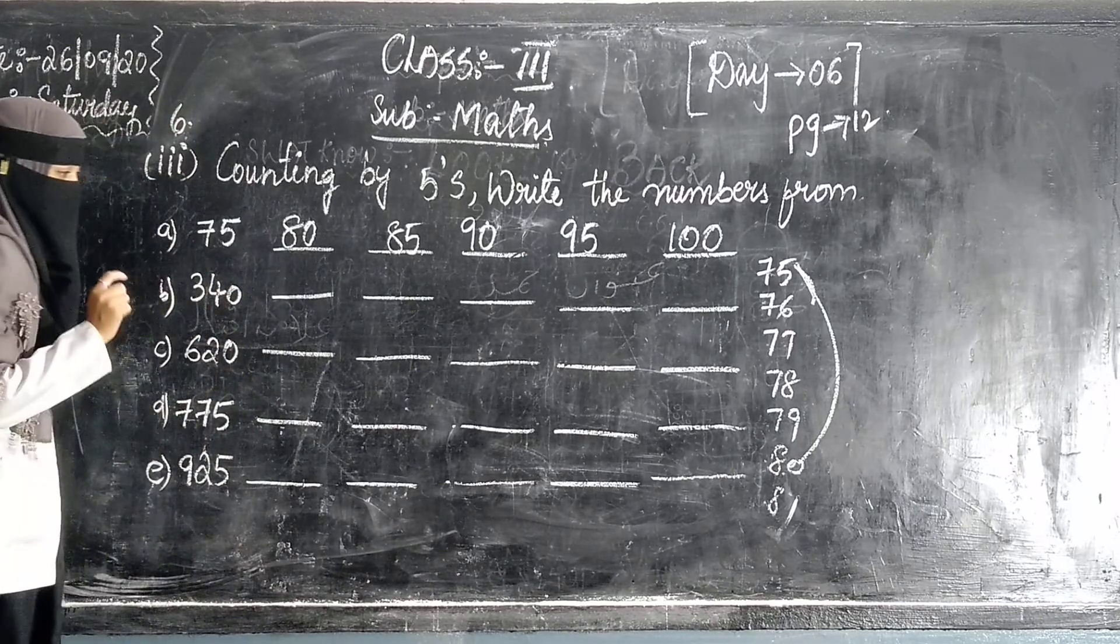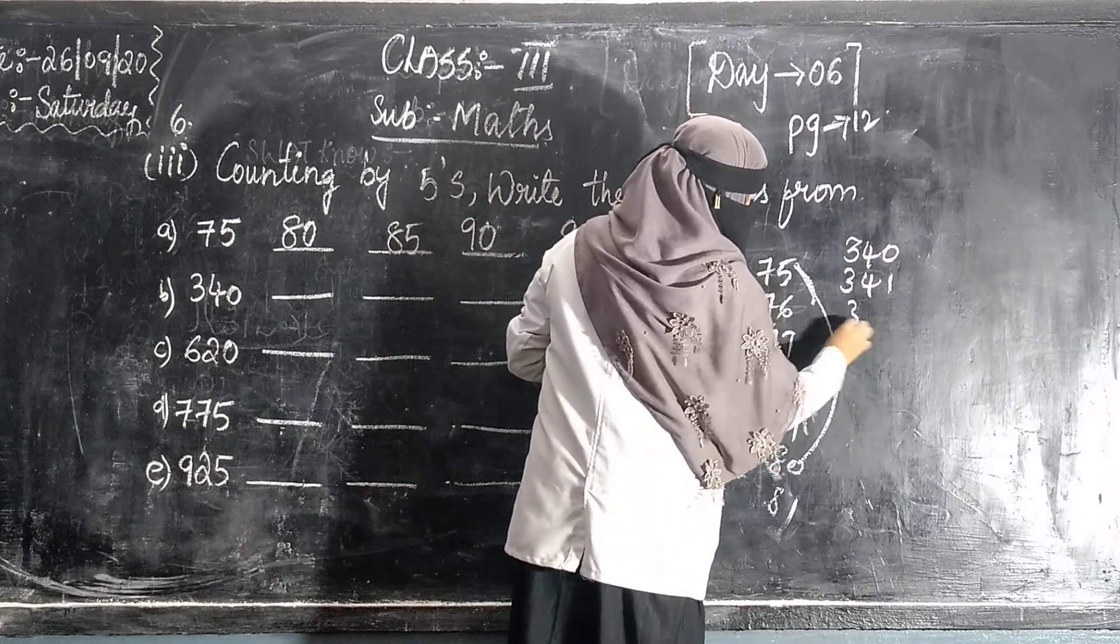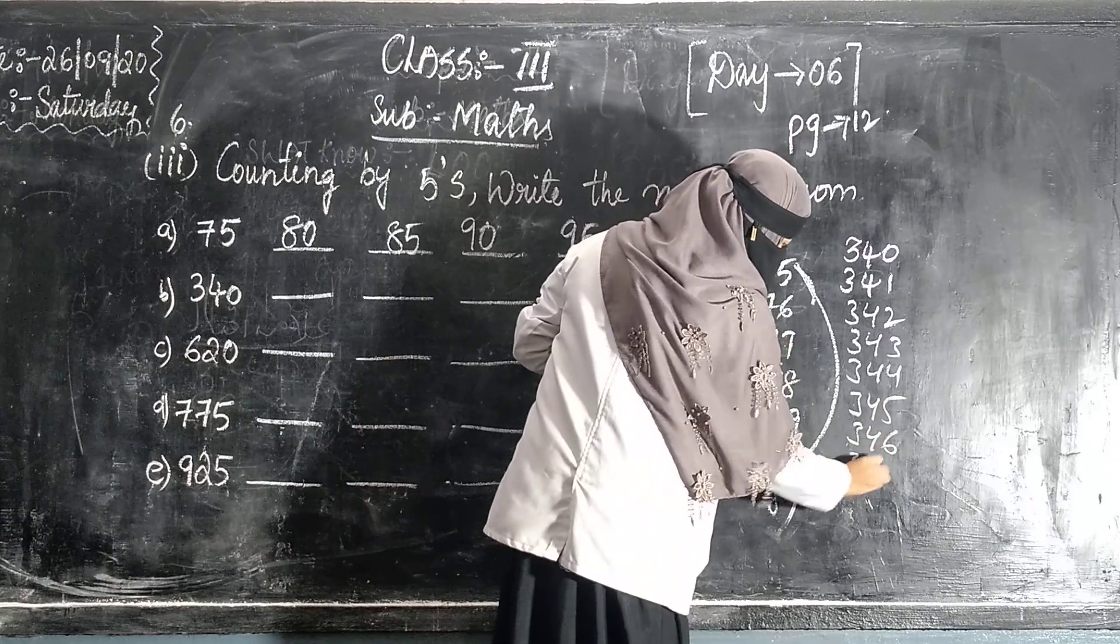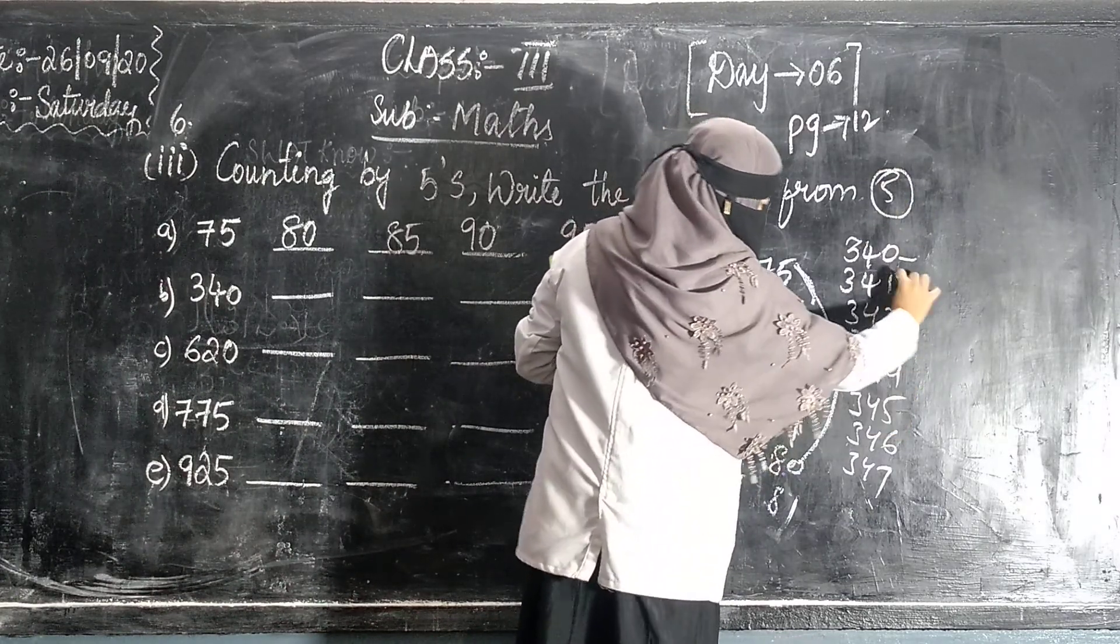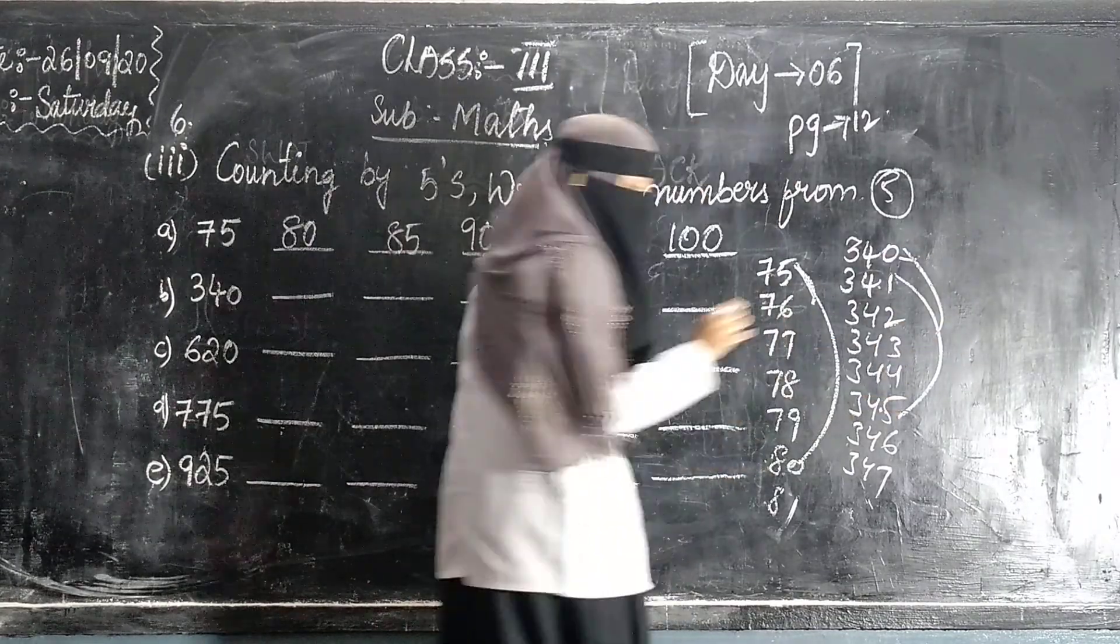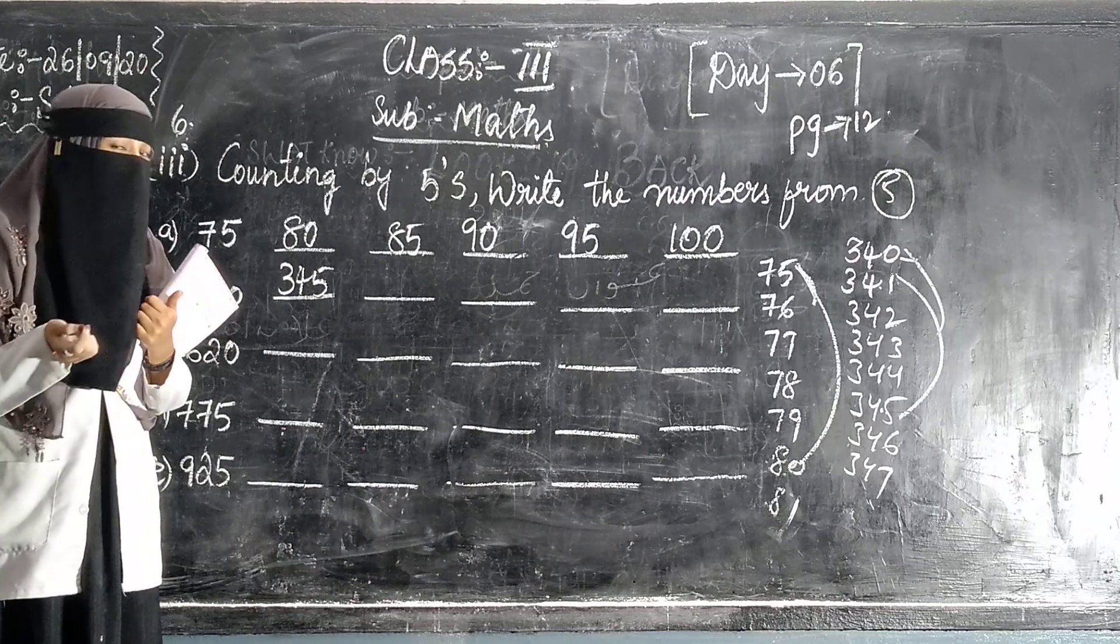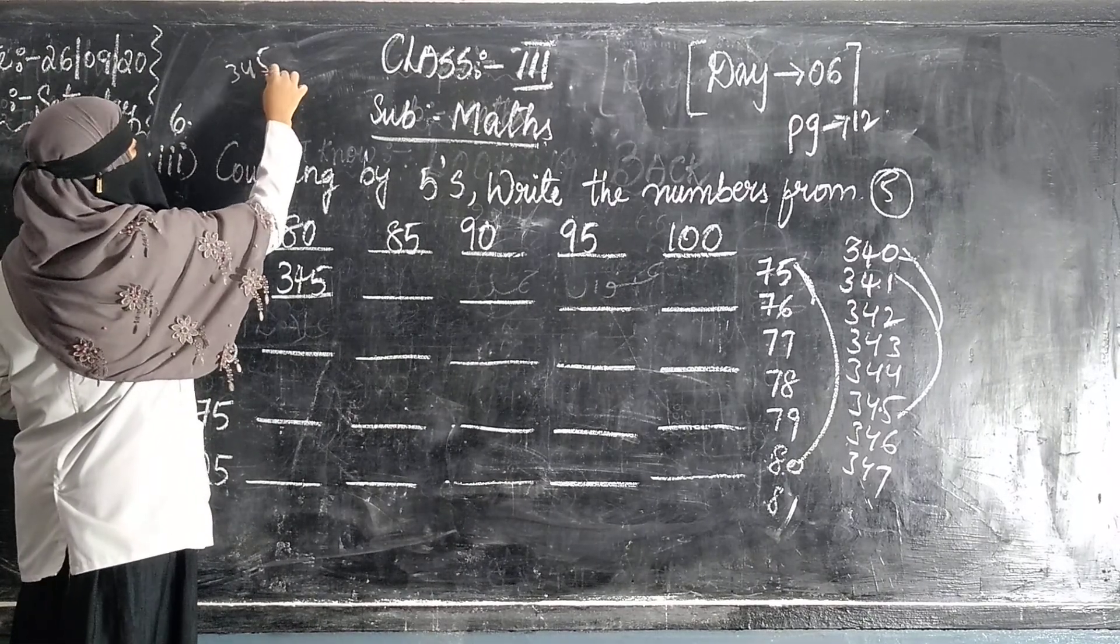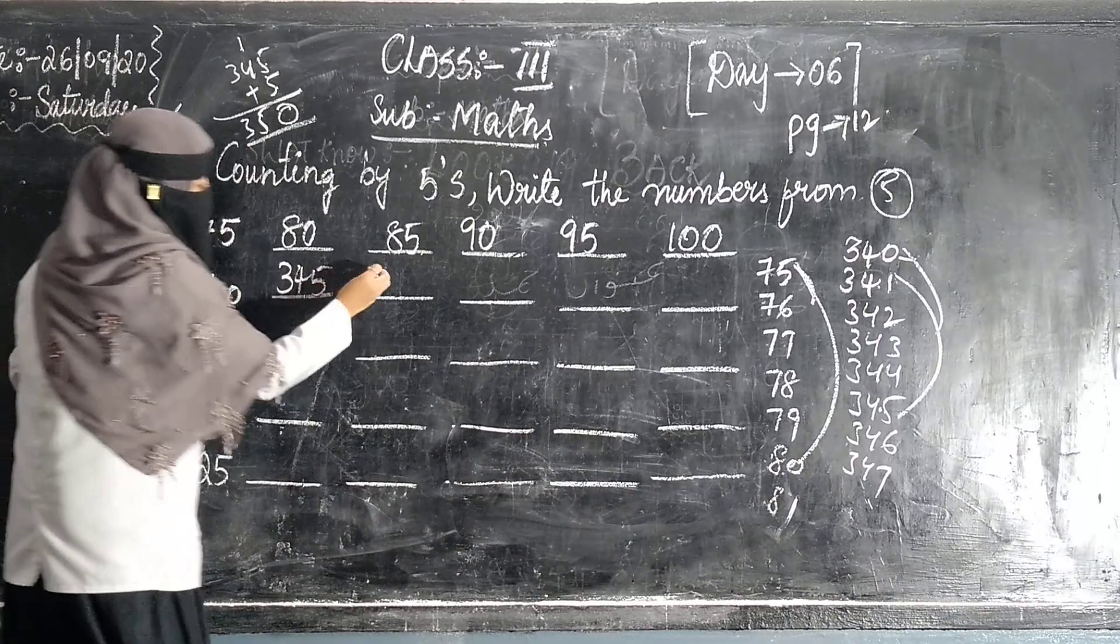We skip 340. 41, 42, 43, 44, 45, 46, 47. How do we skip this number? 5. So the answer is 345. So the answer is 345. Here we skip this number: 1, 2, 3, 4, 5. So what's the answer? 345. And up to 345. So the answer is 350.